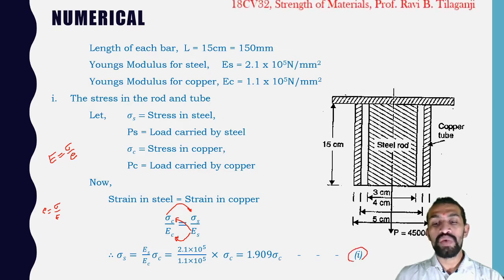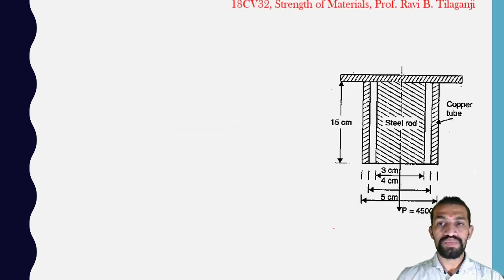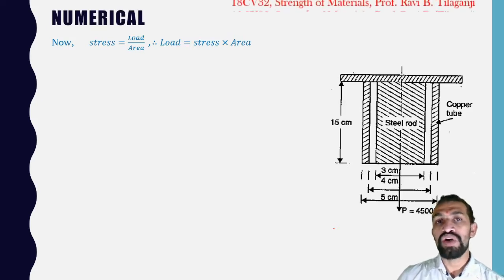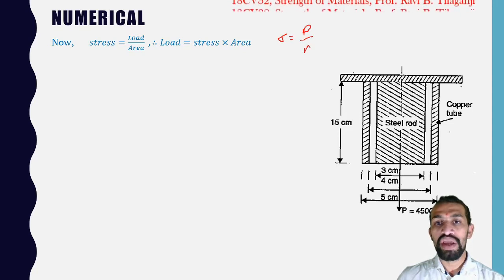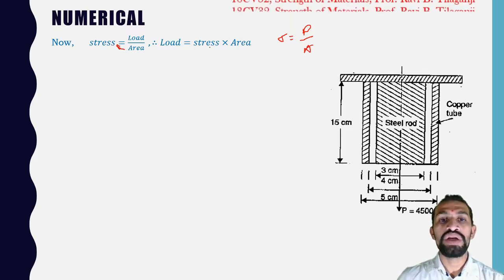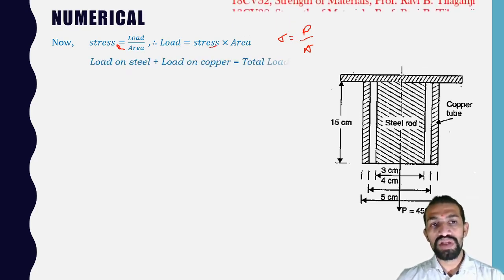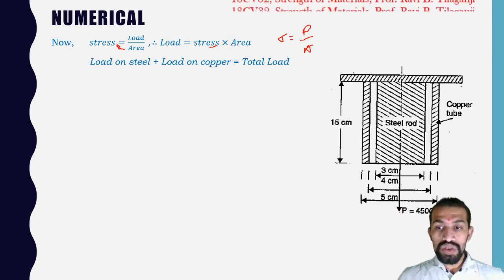Stress = load / area, so load = stress × area. Load on steel plus load on copper must equal the total load: σS·AS + σC·AC = P = 45,000 Newton.